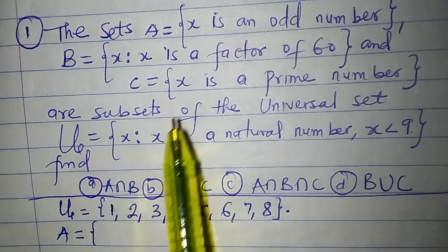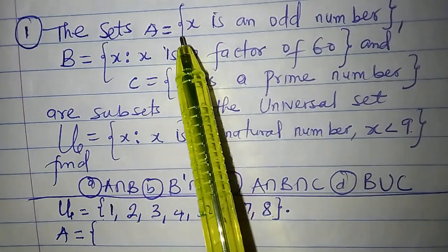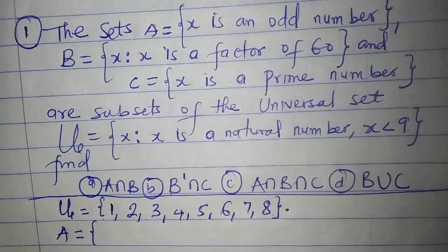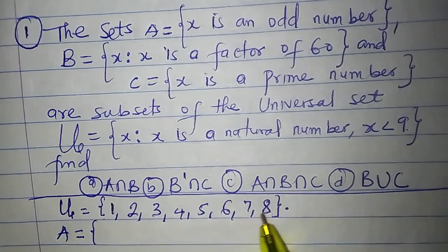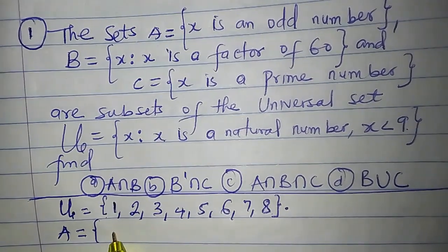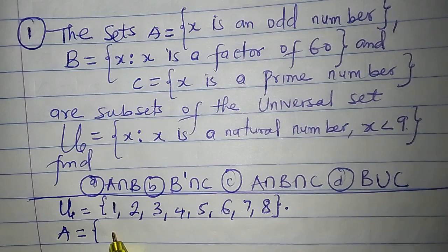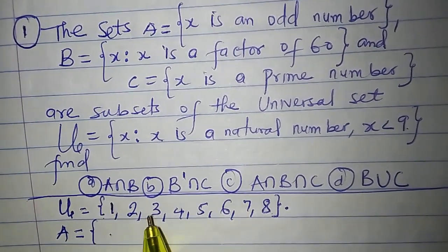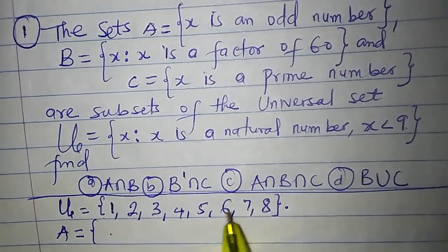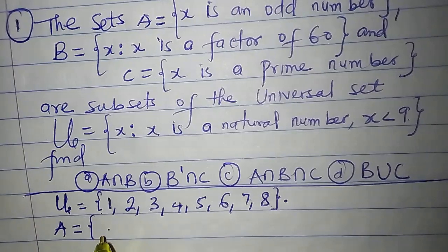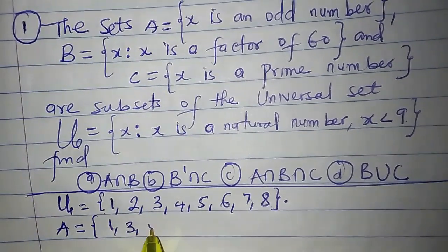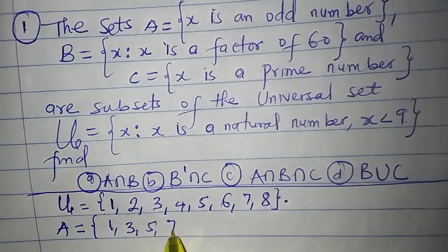Set A says X is an odd number. So what are the odd numbers in this universal set? We'll write them down to form set A. The odd numbers here include 1, 3, 5, 7. So A has the elements 1, 3, 5, and 7.